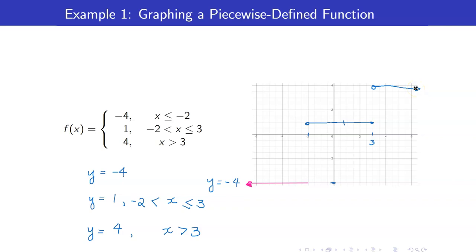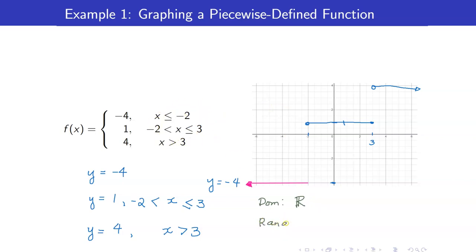This is the complete graph of the function. The domain is the union of x less than or equal to negative 2, union negative 2 up to 3 included, and 3 up to positive infinity — which gives the set of all real numbers. For the range, we are only interested in the y-coordinates. The only y-coordinates on this graph are negative 4, 1, and 4.